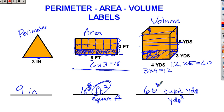Okay, so now you should remember the difference in our labels - inches, square feet, cubic yards. Perimeter, the answer is just whatever the label is. Area, it's always going to be squared, and volume is always going to be cubed for your labels. Thanks for watching.